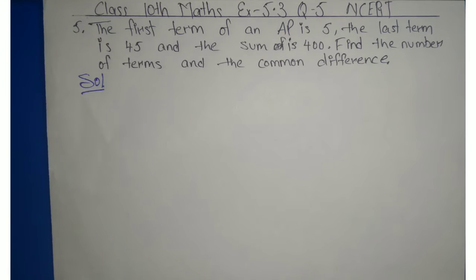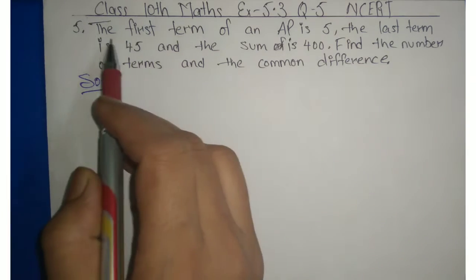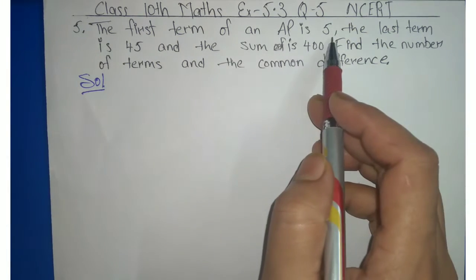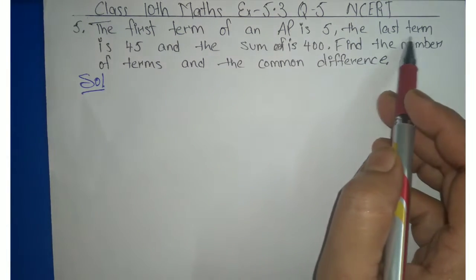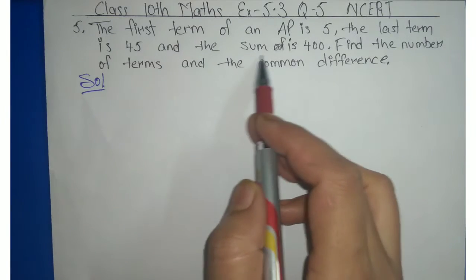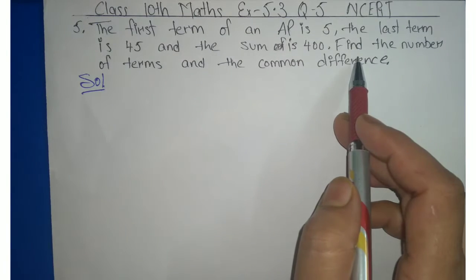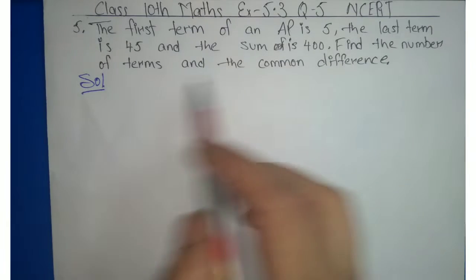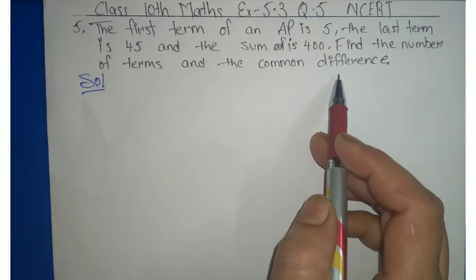Hello everyone, today we will start question number 5 of exercise 5.3, chapter Arithmetic Progression. The first term of an AP is 5, the last term is 45, and the sum is 400. Find the number of terms and the common difference.